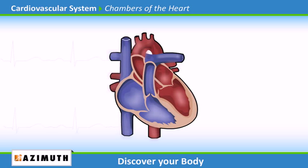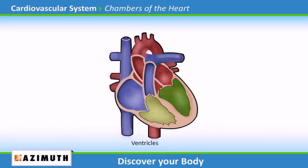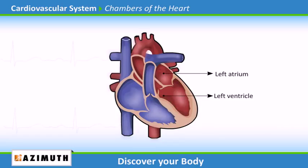Chambers of the Heart. The heart has four chambers. The upper chambers are called the atria and the lower chambers are called the ventricles. The four chambers are the left atrium, left ventricle, right atrium, and right ventricle.